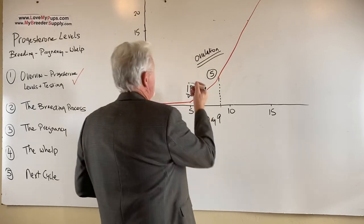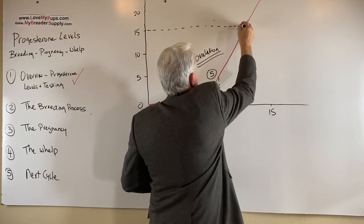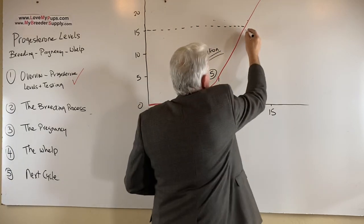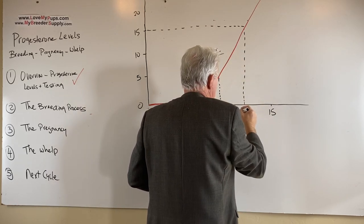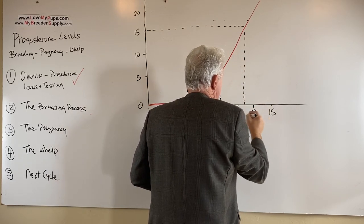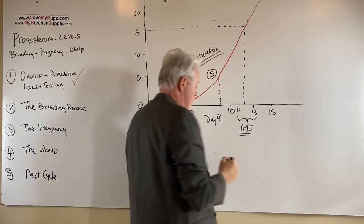We want to breed this dog if we're doing a regular vaginal AI at a progesterone level of approximately 15. And that is in most dogs is going to occur something between day 11 and day 13. That is the normal point that you do an AI in a dog. That's what you'd expect to see.